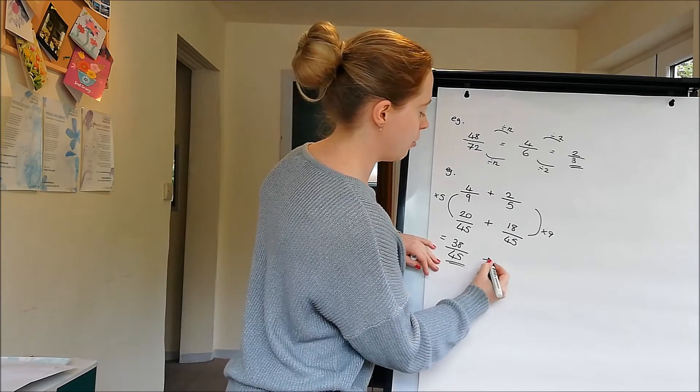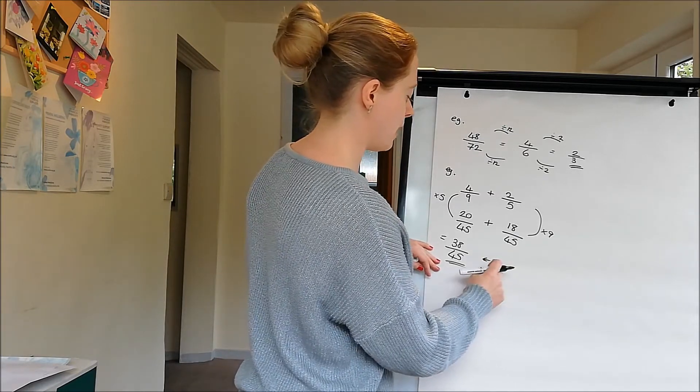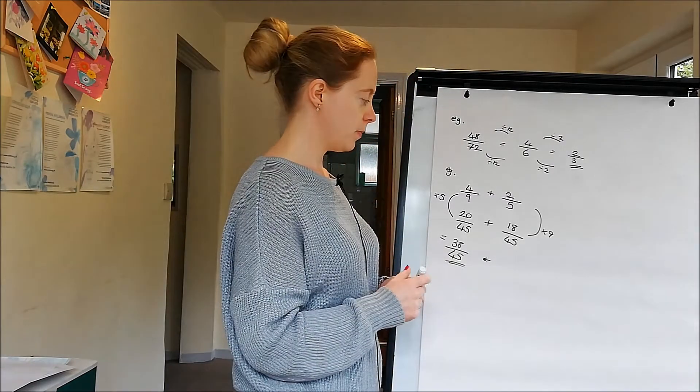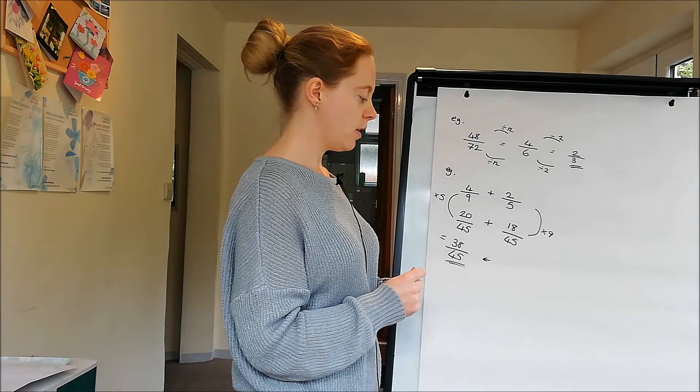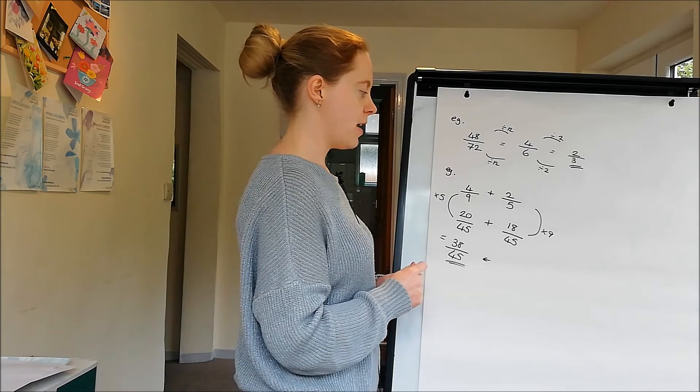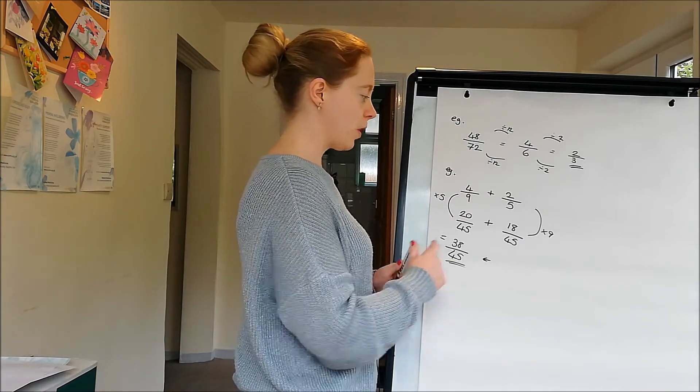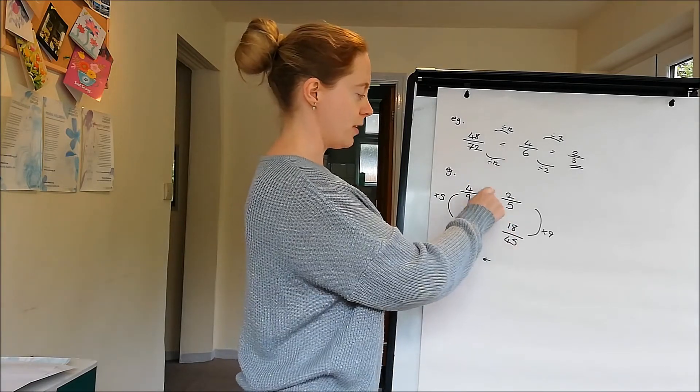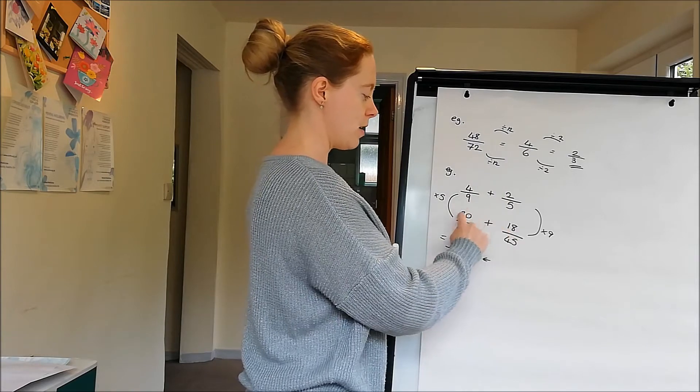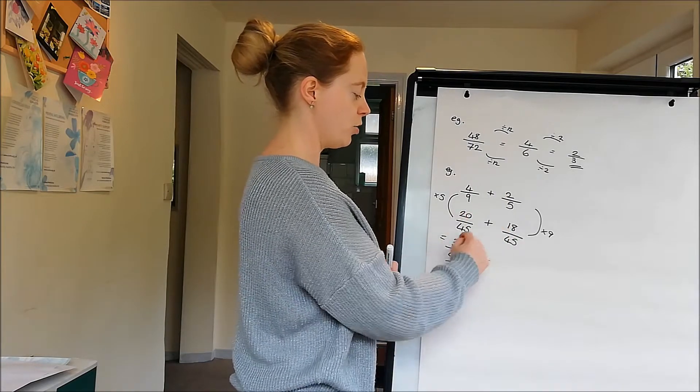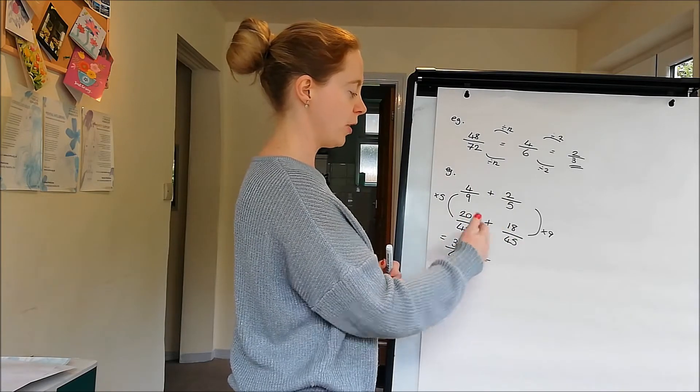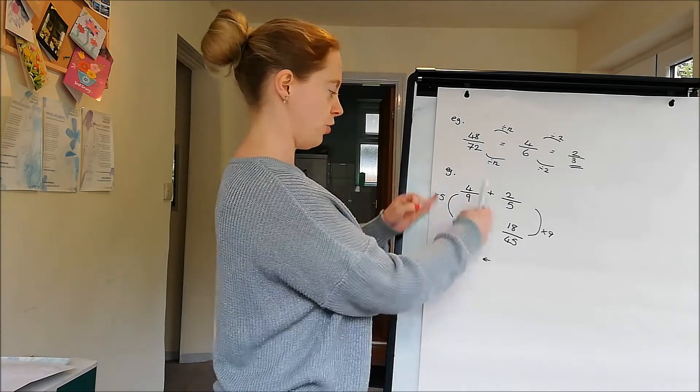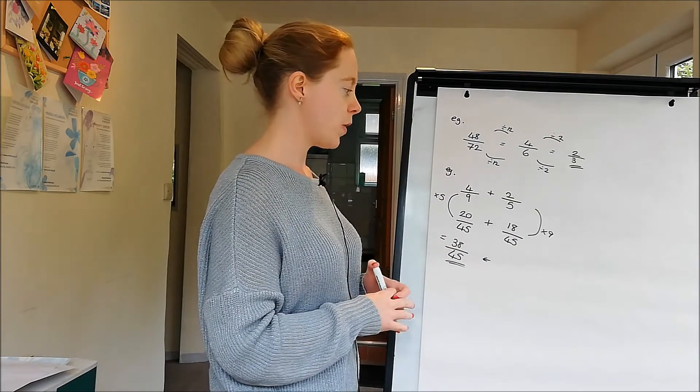Don't add the bottom numbers. If we were subtracting we'd do the same thing except at the end instead of adding we'd take away. So if that was a take then the overall answer would have been 2 over 45 because 20 take 18 is 2. Adding and subtracting are done in the same way up until the last stage.